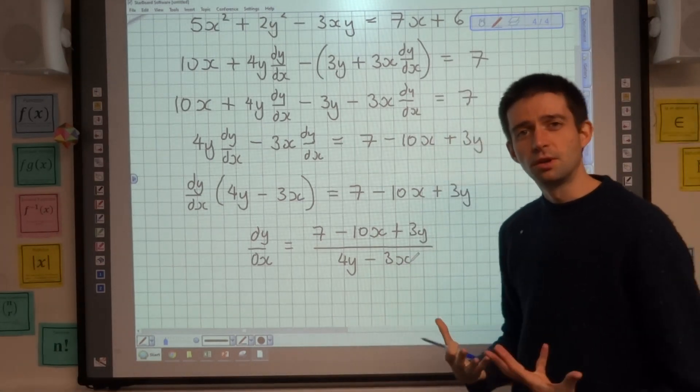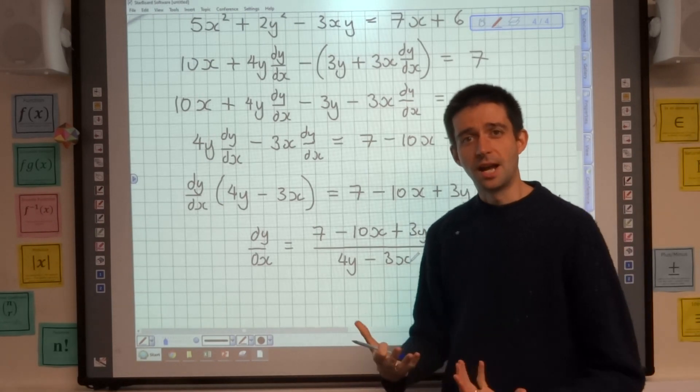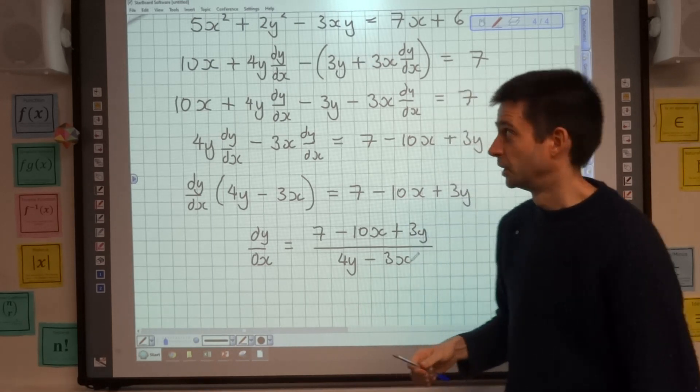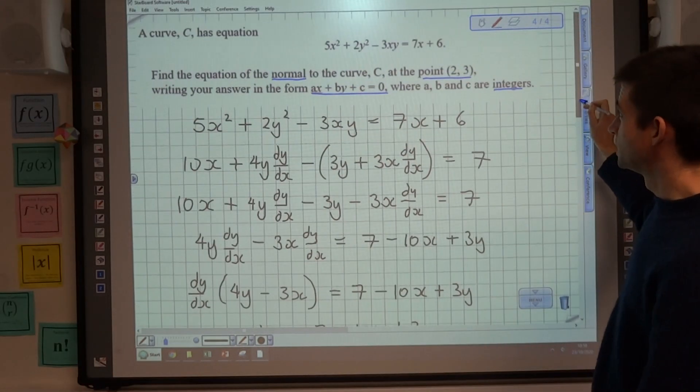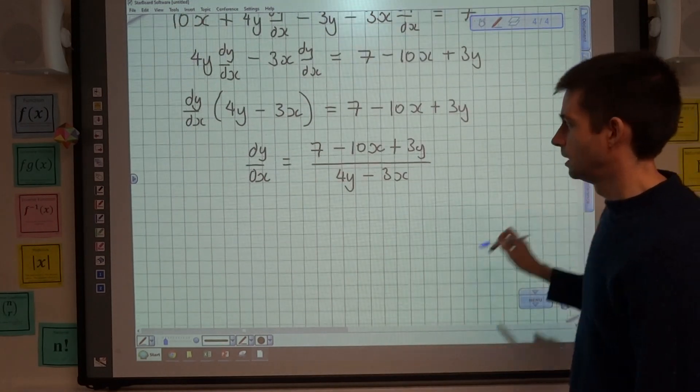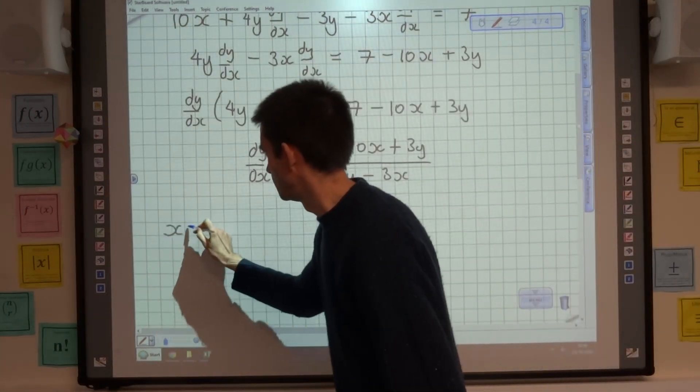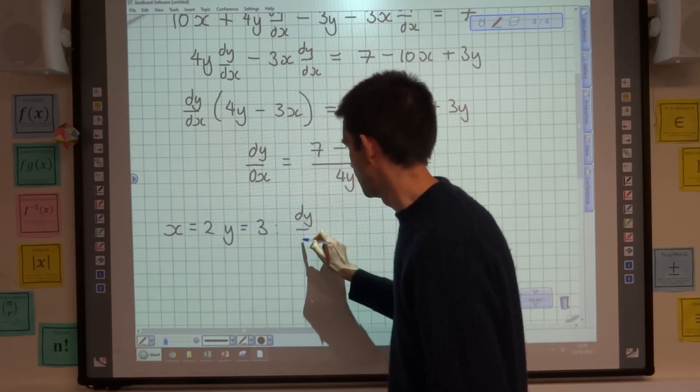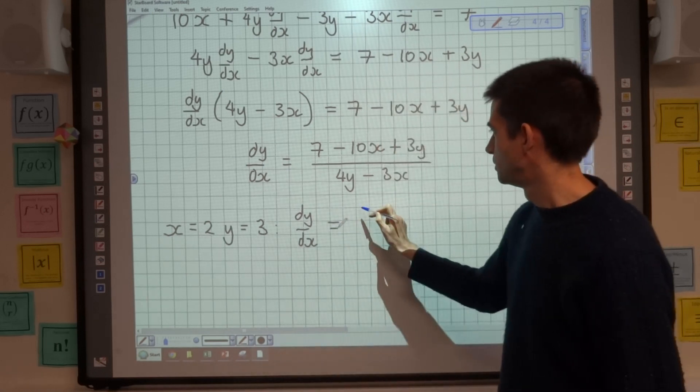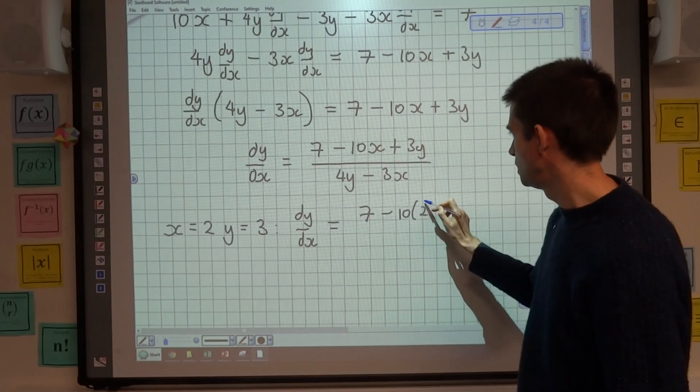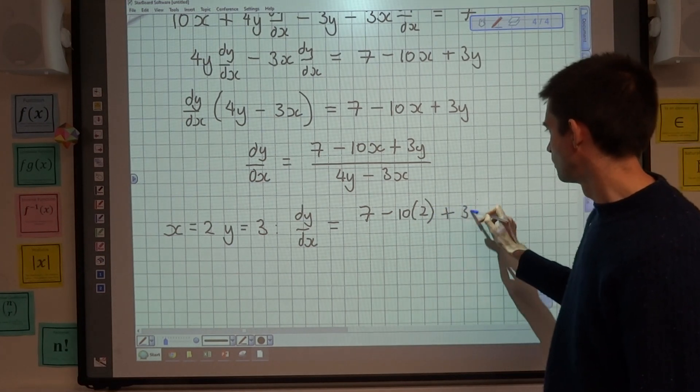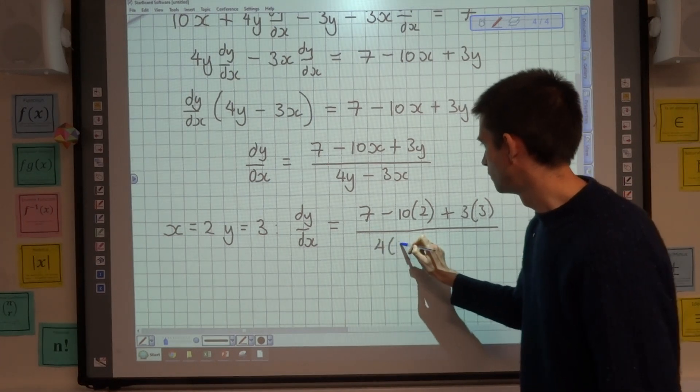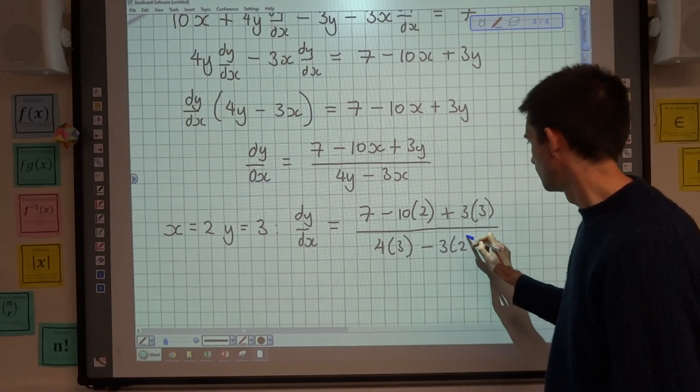That's an expression for the gradient at the point on the curve. I now need to substitute in my value for x and my value of y to find the value of the gradient at that point on the curve. The point I was given was (2, 3), so I'm going to be substituting in x = 2 and y = 3 into my expression for dy/dx. So, 7 - 10(2) + 3(3), all over 4(3) - 3(2).